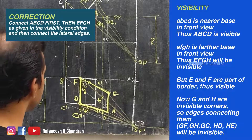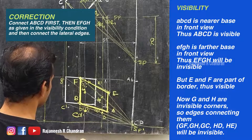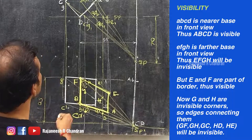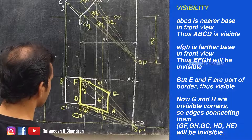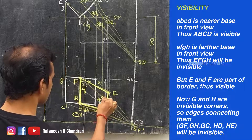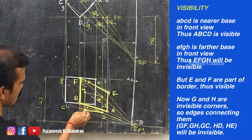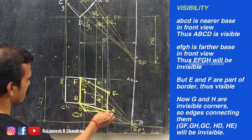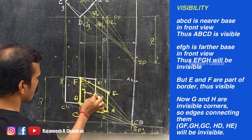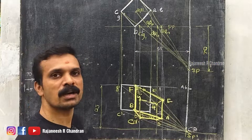Now connect C, D, H, G to form the other face. These are the border edges of the perspective projection. You will get the final solid perspective view of the cube like this.